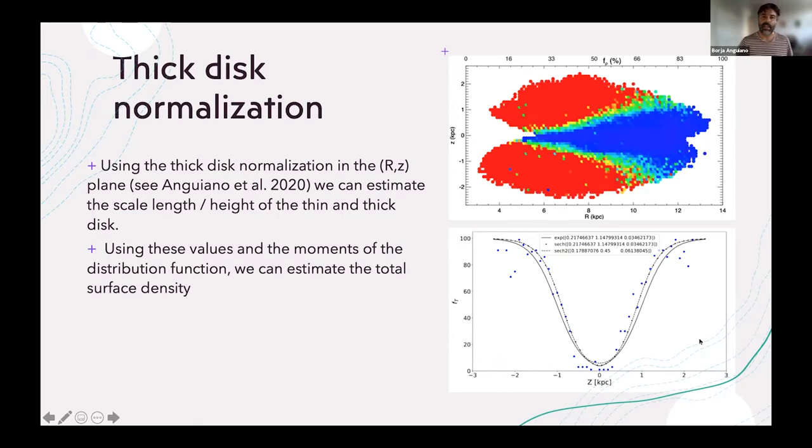I know for a given point how many stars are thin or thick disk. This allows me to build my scale height for the thin and thick disk wherever I'm looking in the galaxy. If I use these values and I use the moments of the distribution, I can estimate the total surface density.